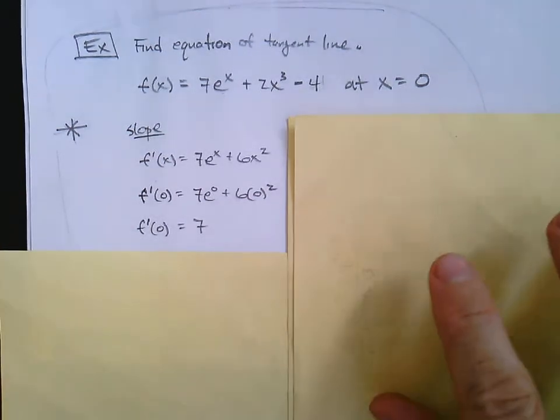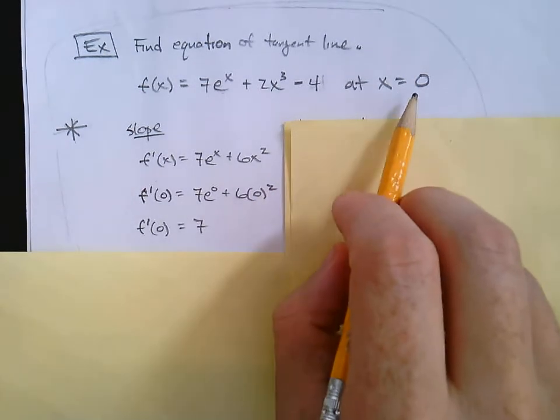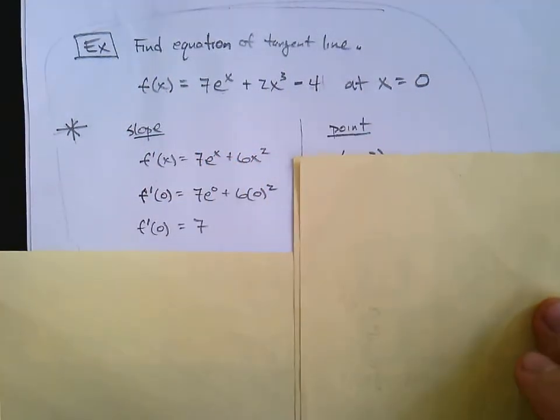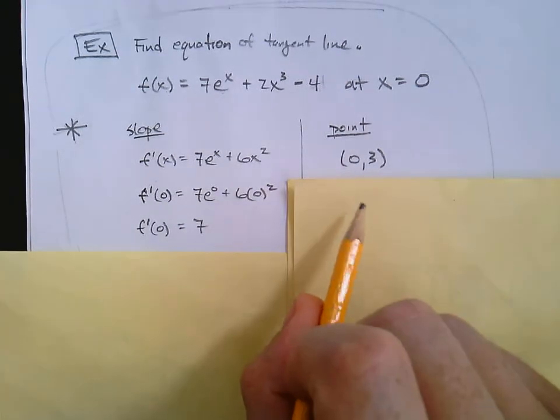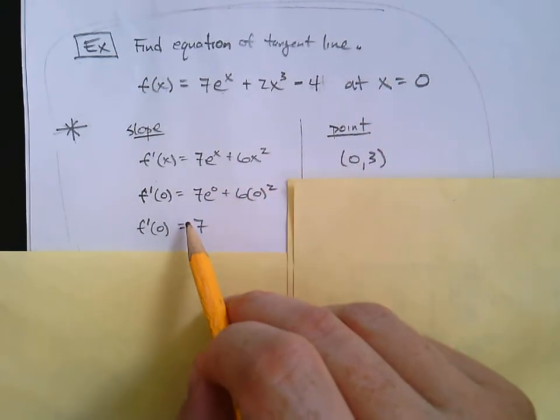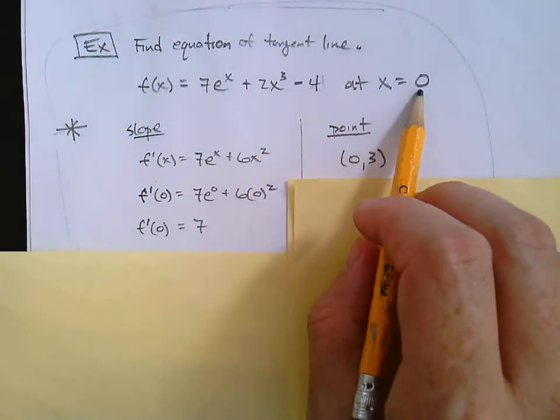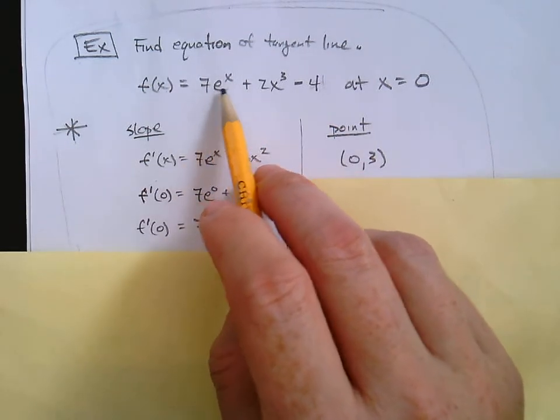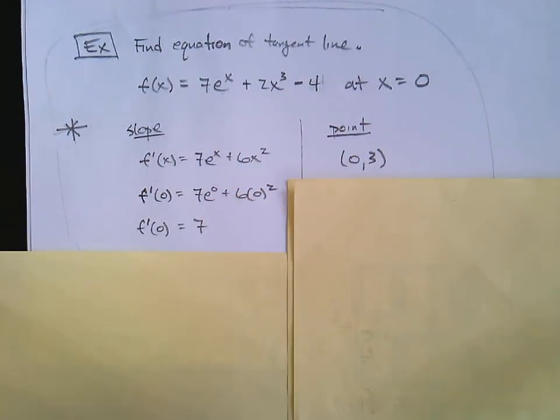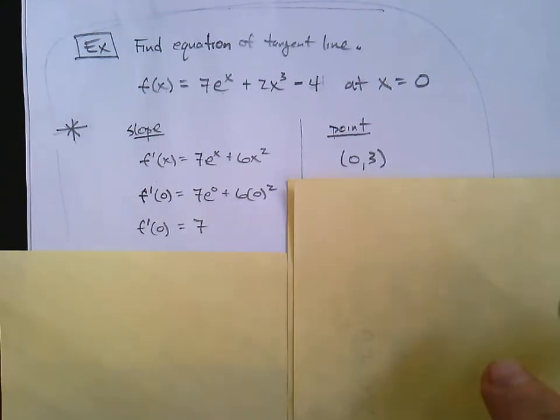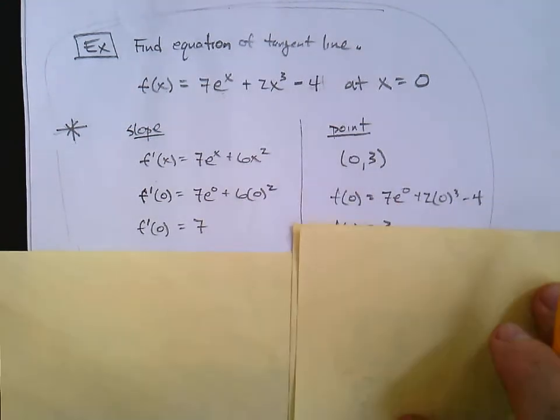We also need a point. Well, if x is 0, we need to know the y coordinate at that point. Here we plug the 0 into the original function. So plugging 0 into the derivative gives us the slope. Plugging it into the original function tells us the y coordinate of the point. And you think, okay, plugging 0 in, let's see, 7 e to the 0, that'd be 7 plus 0 minus 4. 7 minus 4 gives us the 3. It goes to the point 0, 3. Oh, it looks like I've got the work right there. 7 e to the 0 plus 2 times 0 to the 3rd minus 4. There's the 3. Yeah.